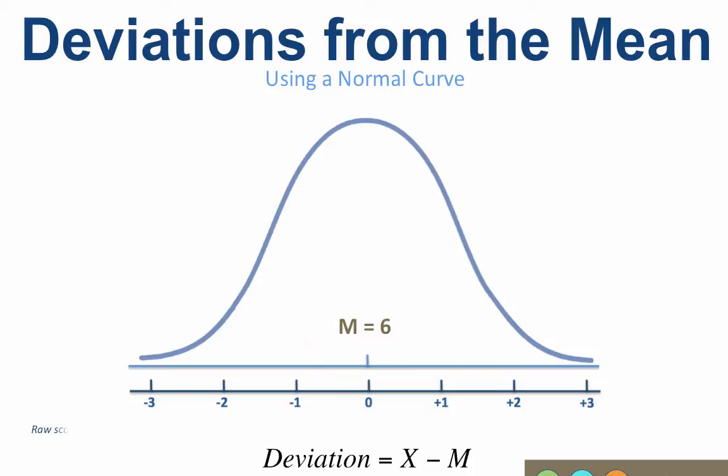In fact, I could add all of these raw scores based upon the deviation scores on a number line. A large deviation score indicates a raw score that is far from the mean. The deviation of negative 3 is farther from the mean than a positive 1. Raw scores far from the mean have lower frequency than scores close to the mean.